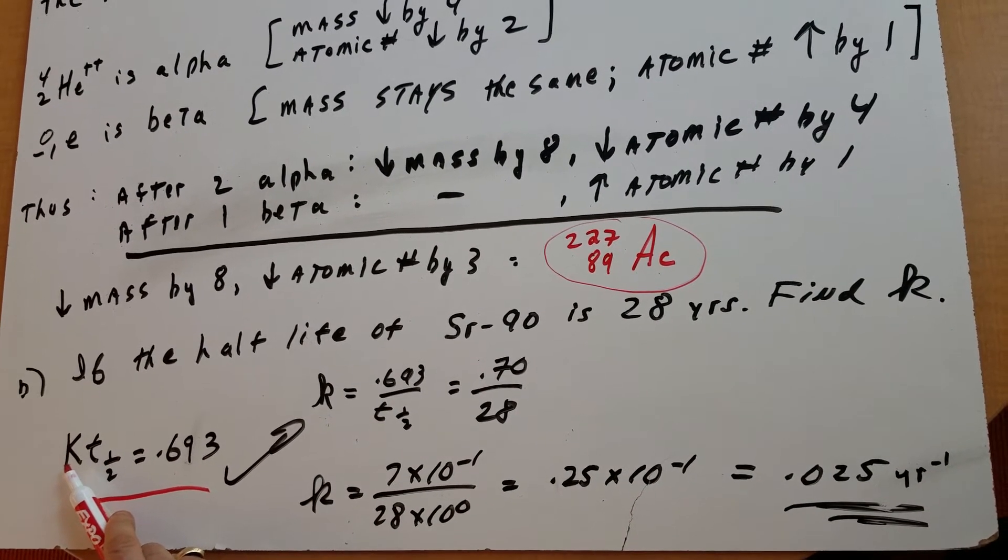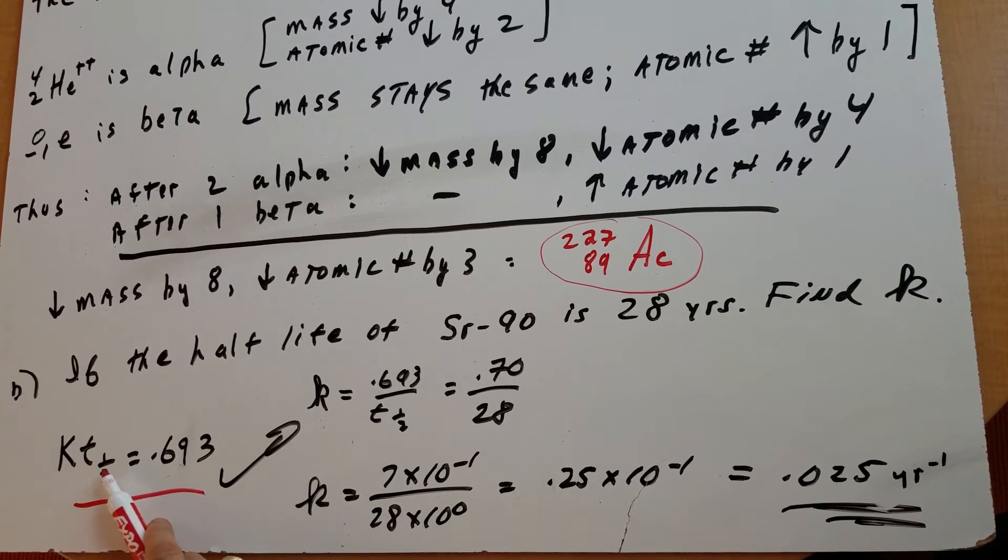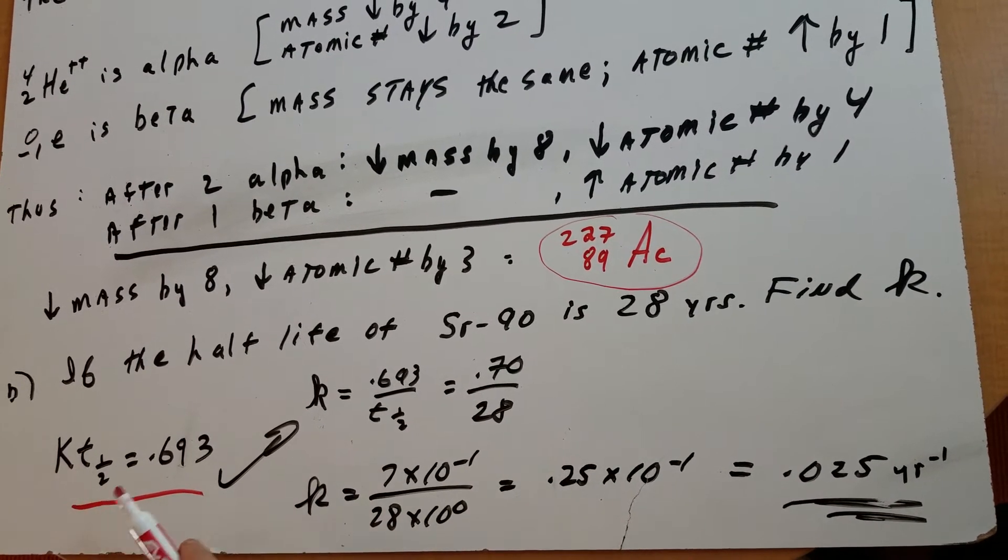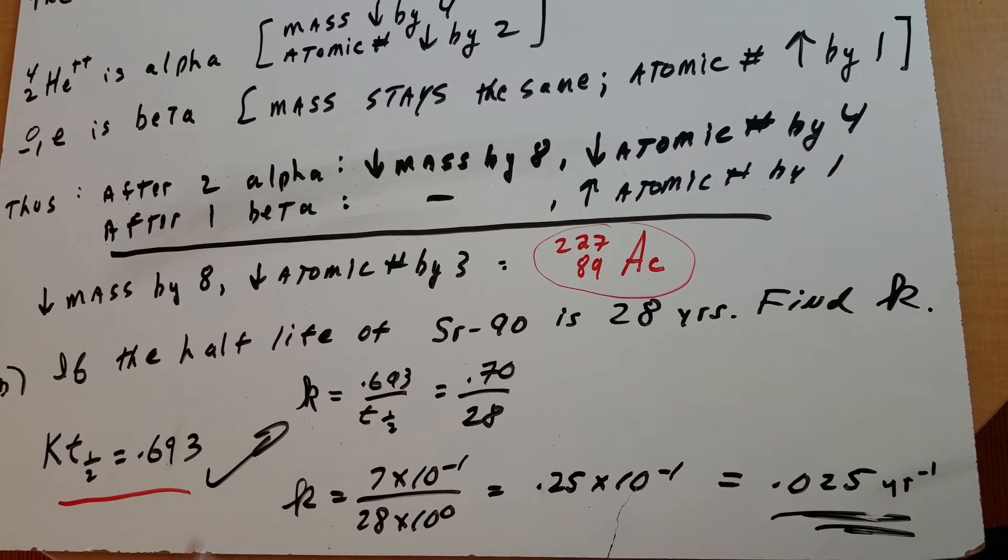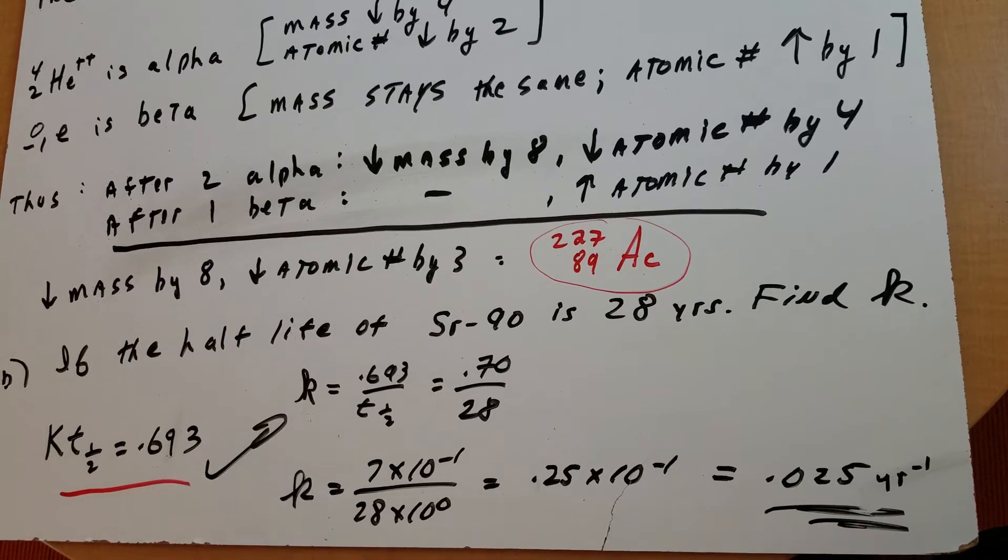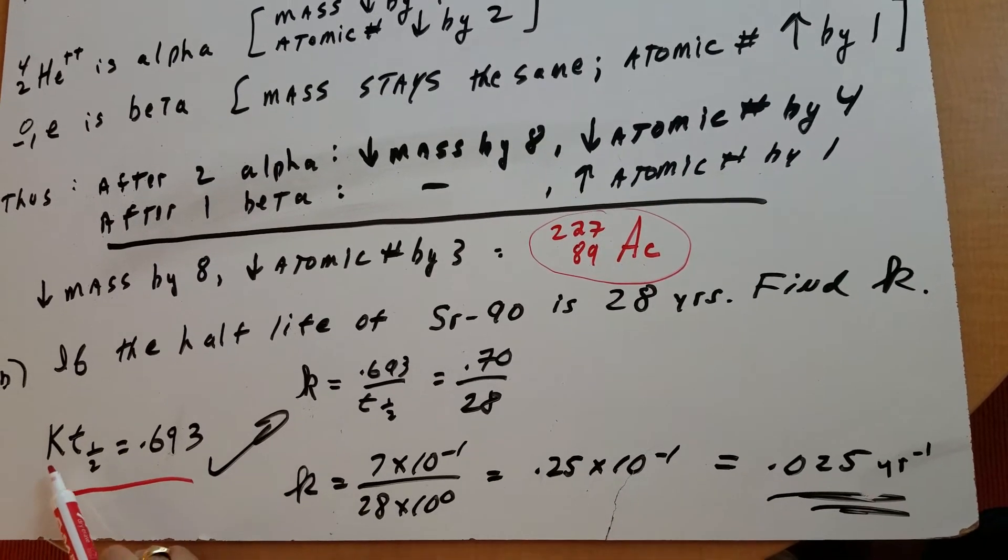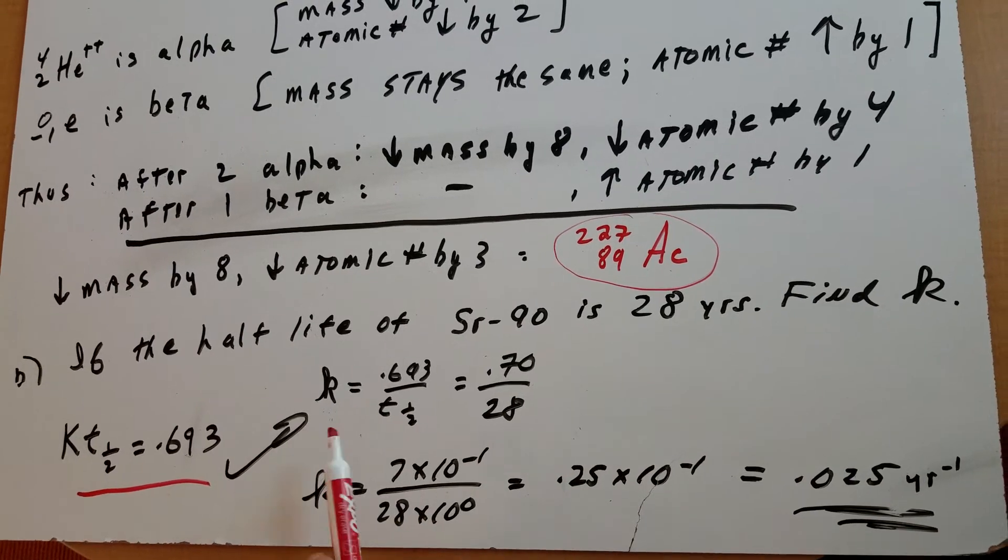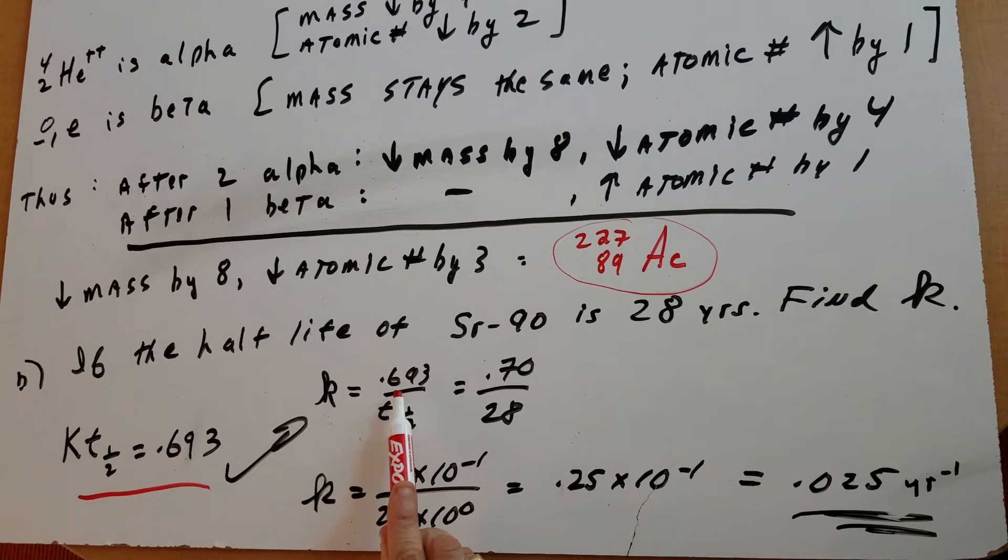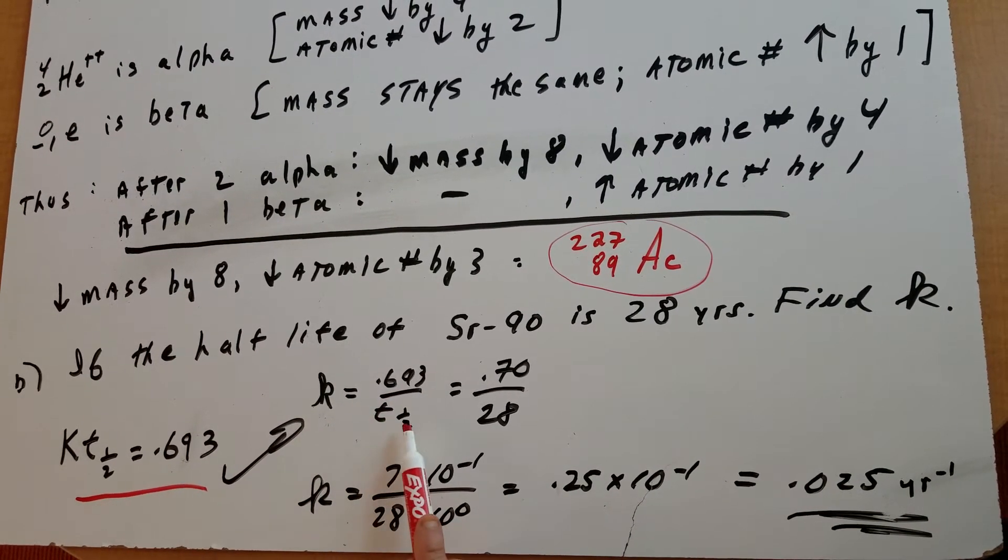K is for the rate constant. T half is the half-life, which is simply the time it takes for half of the sample to disintegrate, and the 0.693, which you've got to just memorize, is something that we derive from the calculus. So K T half equals 0.693, or the rate constant K is 0.693 divided by T half-life.